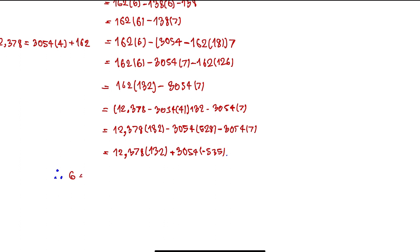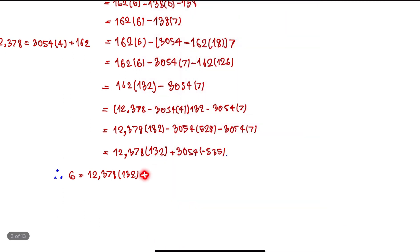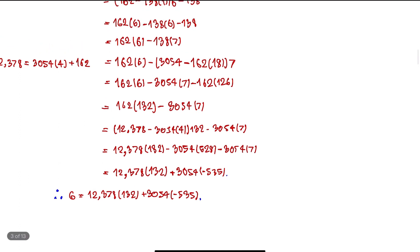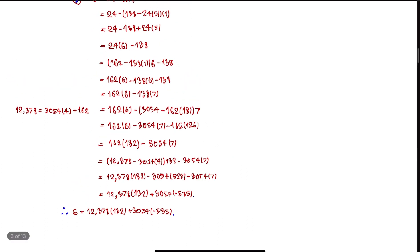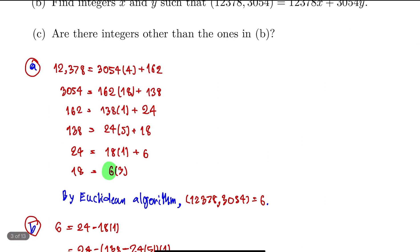So we have 12,378 times 132 minus 3,054 times 528 minus 3,054 times 7, which gives us 12,378 times 132 plus 3,054 times negative 535. This is our Bézout identity: the GCD of 12,378 and 3,054 equals 12,378 times 132 plus 3,054 times negative 535. Now the question is: can we have other integers besides 132 and negative 535?